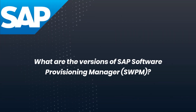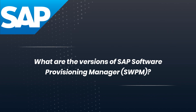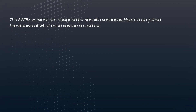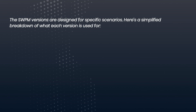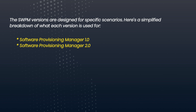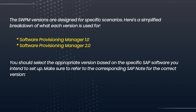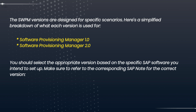What are the versions of SAP Software Provisioning Manager? The SWPM versions are designed for specific scenarios. Here's a simplified breakdown of what each version is used for: Software Provisioning Manager 1.0 and Software Provisioning Manager 2.0. You should select the appropriate version based on the specific SAP software you intend to set up. Make sure to refer to the corresponding SAP Note for the correct version.